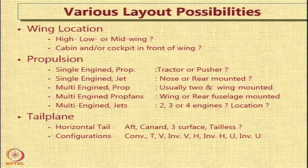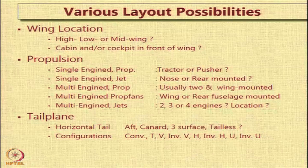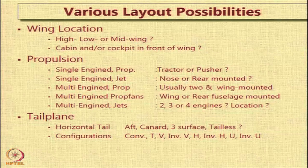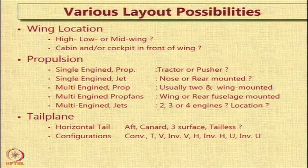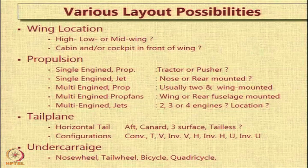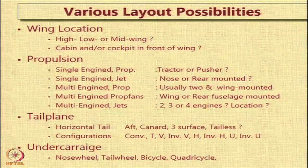For the tail plane, we have a choice for the horizontal tail: it could be an aft tail, a canard, a three-surface configuration, or tailless. For the vertical tail configuration, options include conventional tail, T-tail, V-tail, inverted V, H-tail, inverted H, U, inverted U, and others. As far as the landing gear is concerned, options include nose wheel type, tail wheel type, bicycle type, quadricycle type, and several other types. Thank you for your attention; we will now move to the next section.